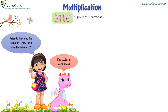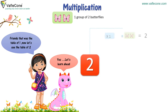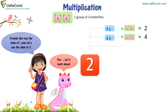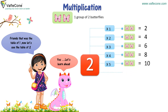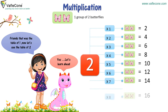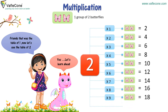1 group of 2 butterflies. 2 into 1 is equal to 2. 2 into 2 is equal to 4. 2 into 3 is equal to 6. 2 into 4 is equal to 8. 2 into 5 is equal to 10. 2 into 6 is equal to 12. 2 into 7 is equal to 14. 2 into 8 is equal to 16. 2 into 9 is equal to 18. 2 into 10 is equal to 20.